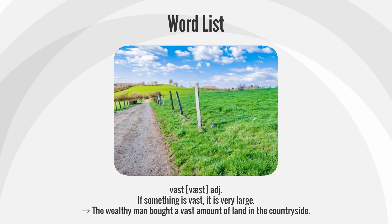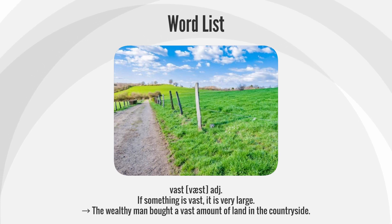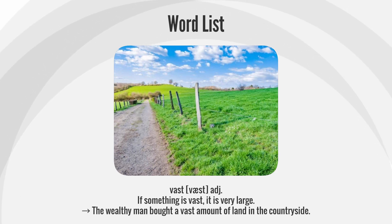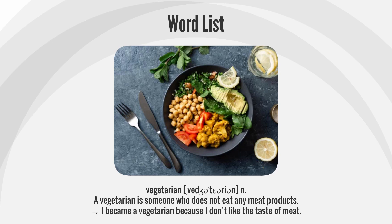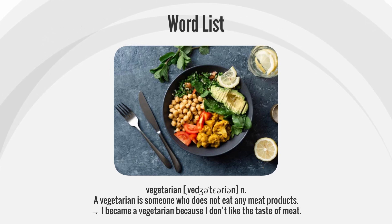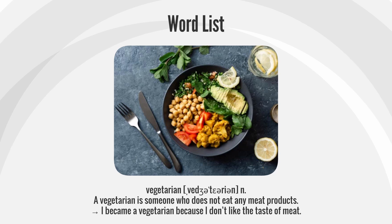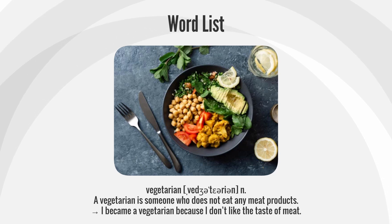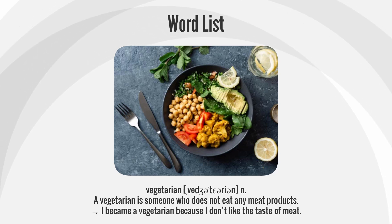The wealthy man bought a vast amount of land in the countryside. Vegetarian. A vegetarian is someone who does not eat any meat products. I became a vegetarian because I don't like the taste of meat.